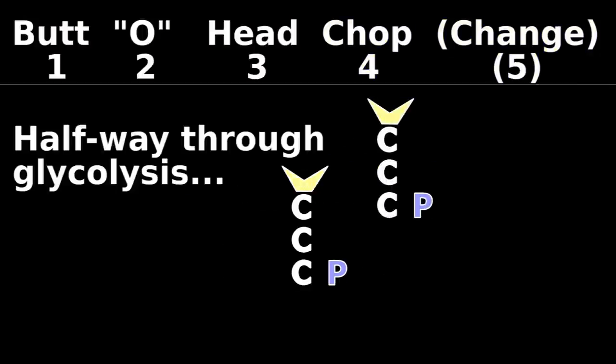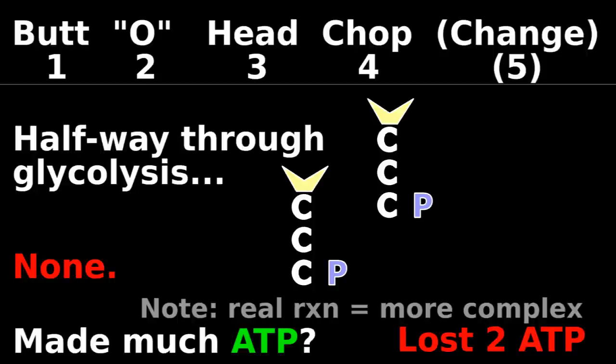Now that we're halfway through glycolysis, how much ATP have we made? None. That's right, so far we've actually lost 2 ATP.